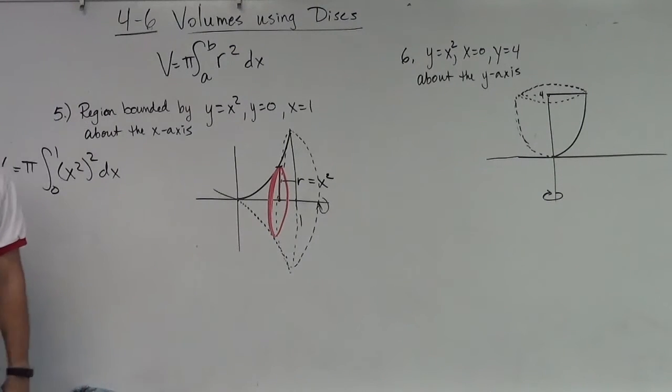That's all we have to do. And now, all we have to do is do our anti-derivative, like we normally do. So x to the fifth over five, evaluated from one to zero pi, and we get pi over five.